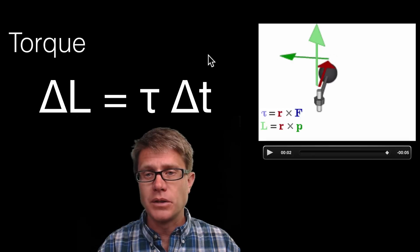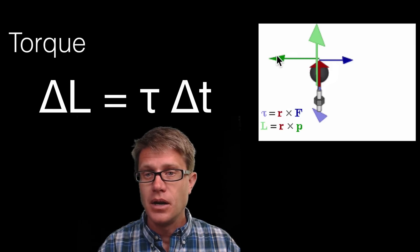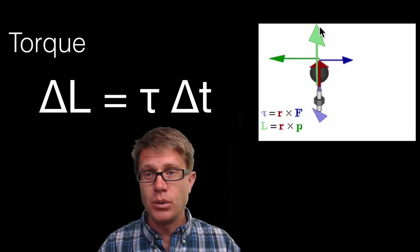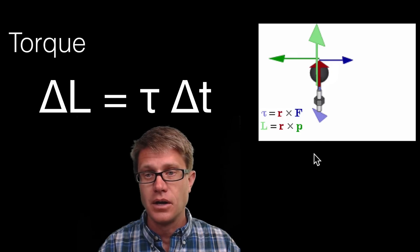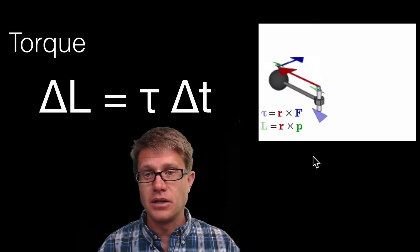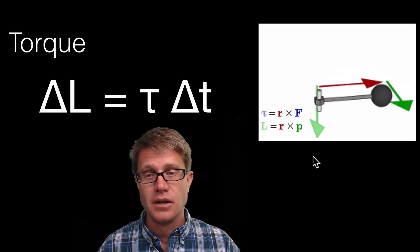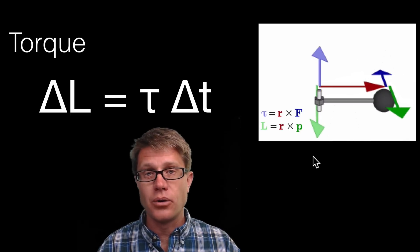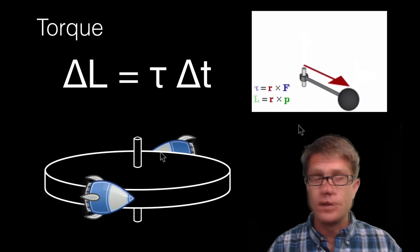If we reverse the torque direction, the object already has momentum in one direction, but the reversed torque applies force the other way, causing a decrease in angular momentum until it stops — or goes in the other direction entirely.